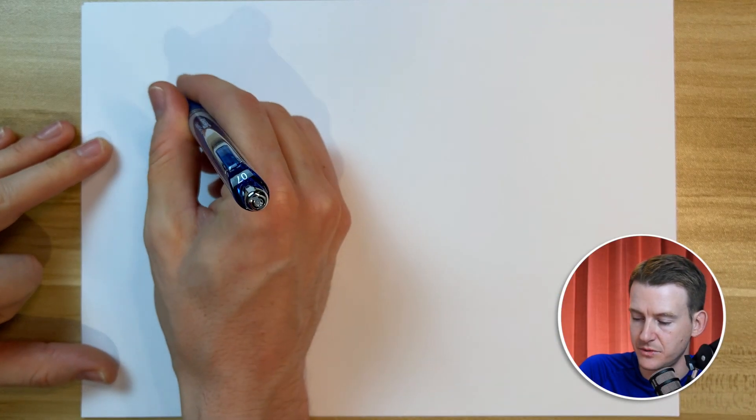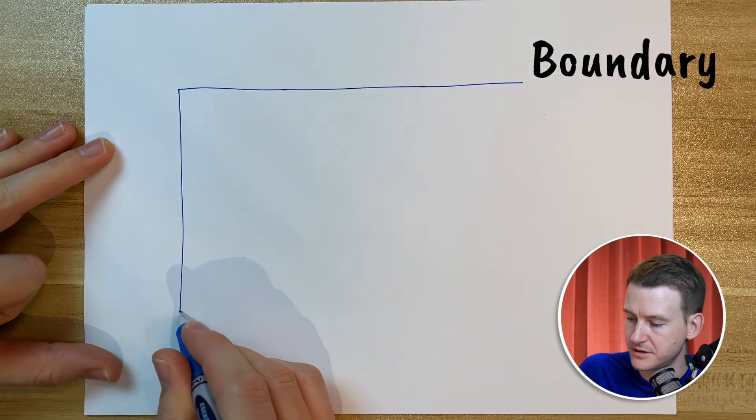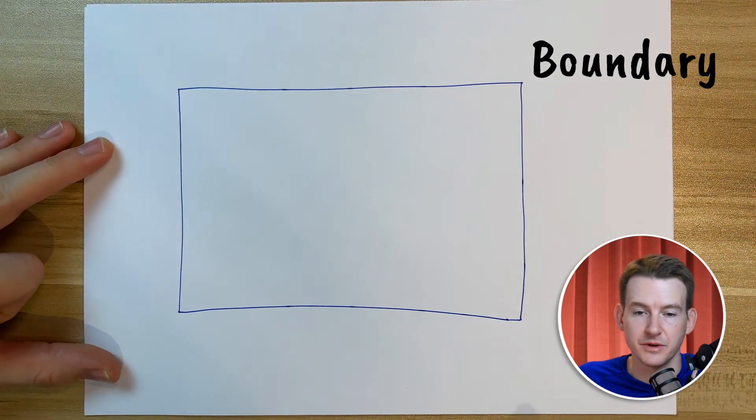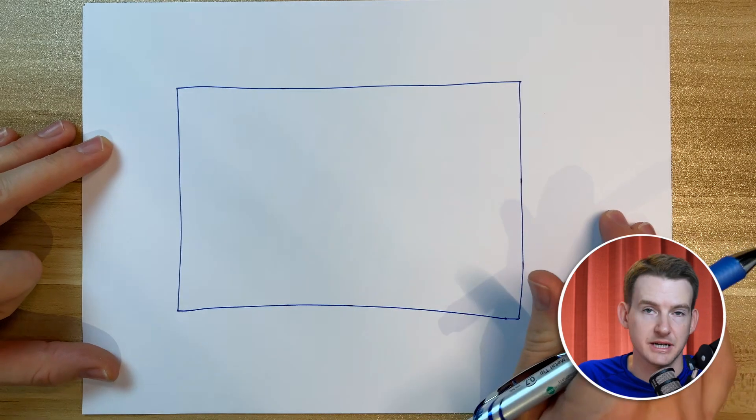Now a good system diagram starts with a boundary. This is just a box that goes all the way around the system and allows us to see what is inside and outside of our system.